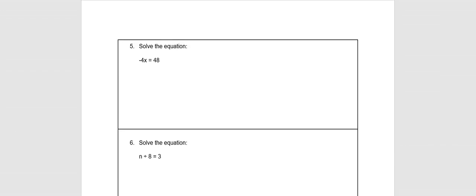In number 5, this is negative 4 times x. The inverse of multiplication is division, so to eliminate the coefficient negative 4, we divide both sides by negative 4. That will cancel negative 4 divided by negative 4, and we have x equals 48 divided by negative 4. The understood sign of 48 is positive divided by negative, so the answer should be negative 12.